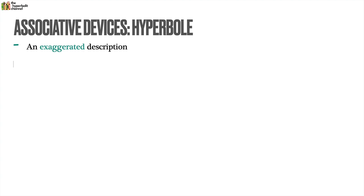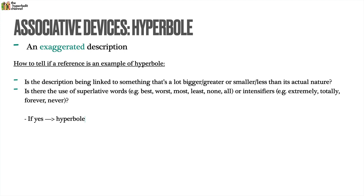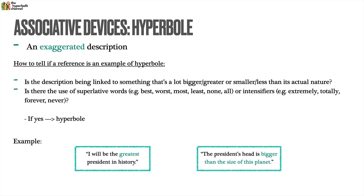Next up, hyperbole, which is very simple — it means an exaggerated description. 'Hyper' as a prefix means bigger than. To identify hyperbole, ask: is the description linked to something a lot bigger or smaller than its actual nature? Or look for superlatives like best, worst, most, least, none, all, or intensifiers like extremely, totally, forever, never. For example, 'I'll be the greatest president in history' is clearly hyperbolic, as is 'the president's head is bigger than the size of this planet' — no one's head can rival the size of the planet.